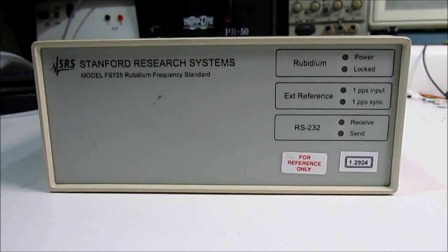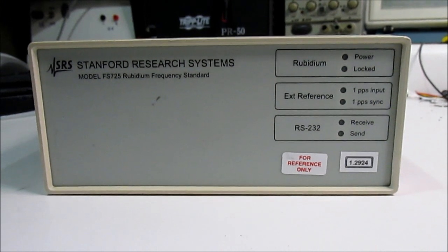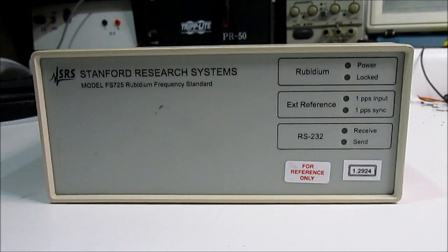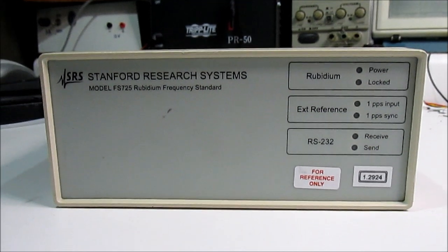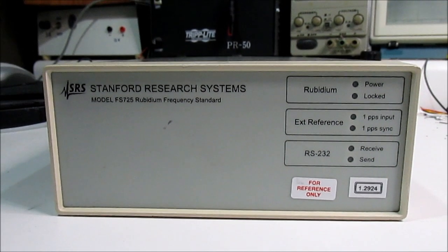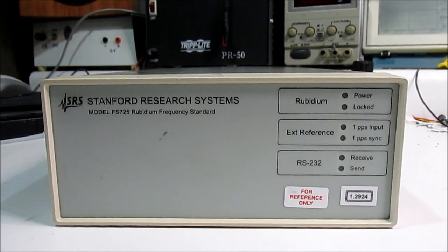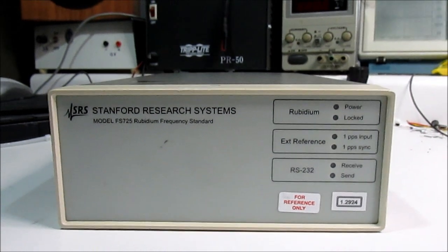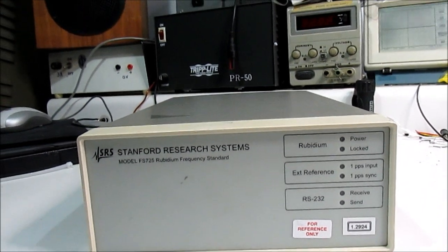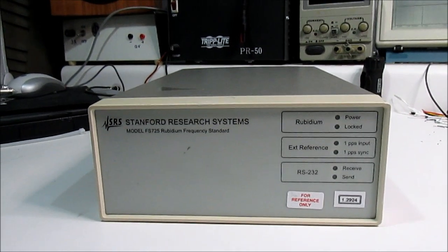So today we're going to take a look at this Stanford Research Systems model FS725 Rubidium frequency standard. I got this out of some e-waste a couple years ago and had previously checked that it worked. So today's plan is to just give an overview of it and show its operation a little bit.